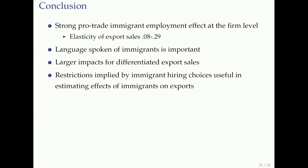To summarize: we find a large pro-trade immigrant effect — a trade creation effect of immigration — at the firm level. The elasticity of export sales with respect to immigrants is in the range of 0.3, not too far from the aggregate numbers. Language is important as a mechanism. There are much bigger impacts for differentiated versus homogeneous goods, consistent with information being more important for differentiated products. And we find it useful to use restrictions implied by the theory of the firm's optimal hiring choices to sort out these effects.